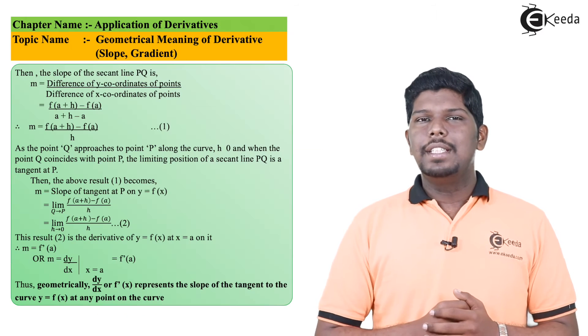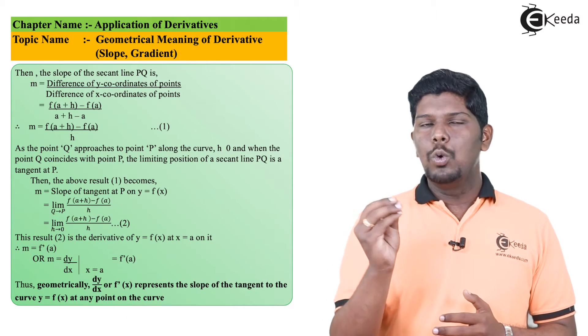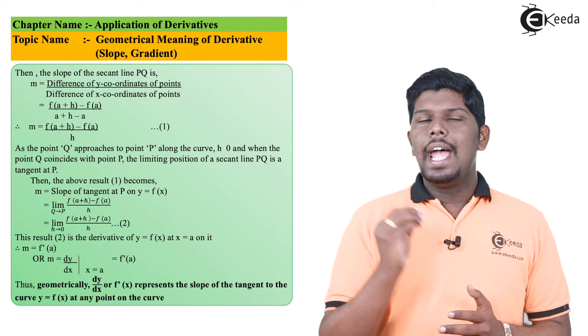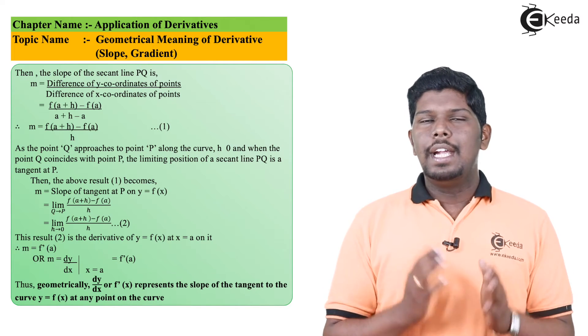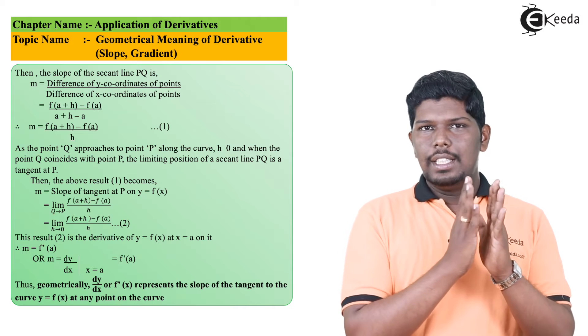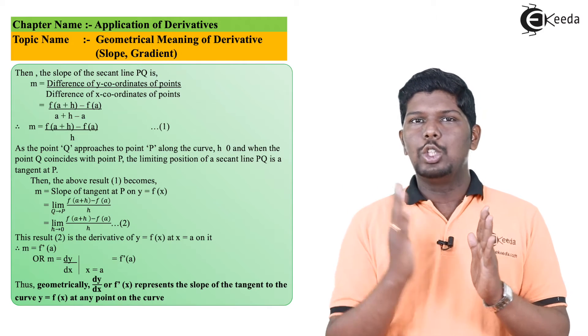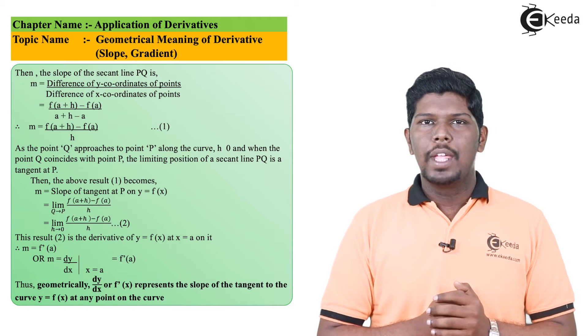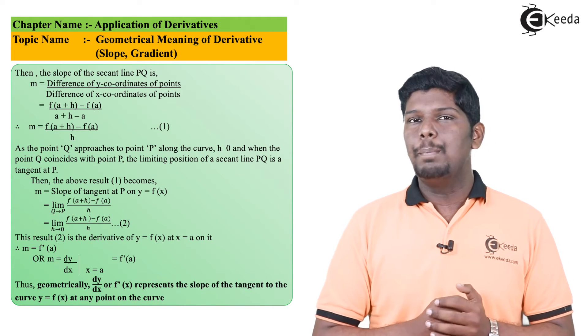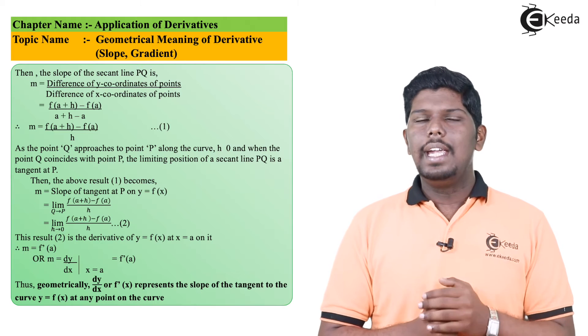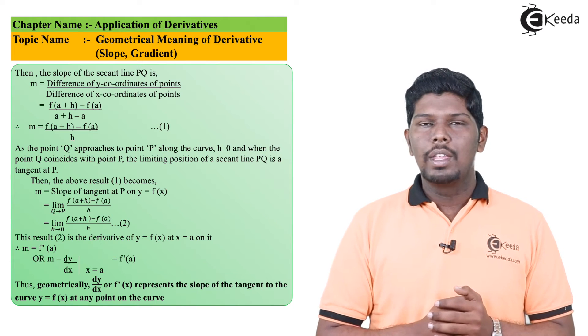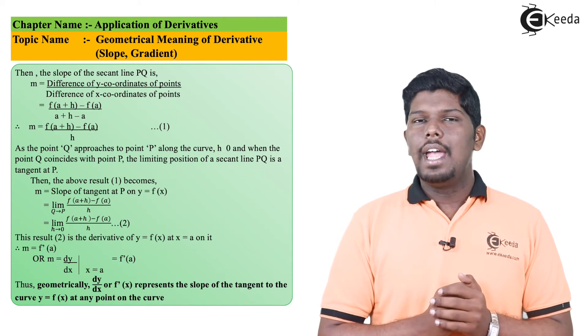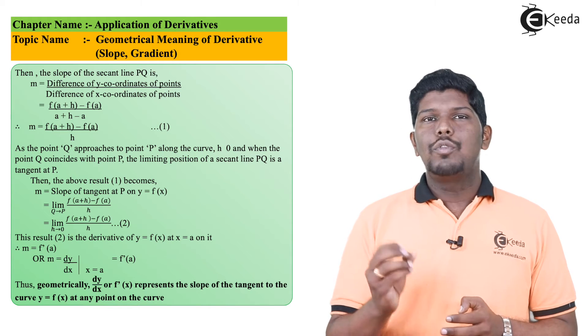Now just imagine I am trying to take Q near P, and that distance will be so small that the value of h—that is, the difference between x and the next coordinate, that is a plus h—that difference h is tending to 0. It means point P and Q are appearing very closer. So in that case, h will be tending to 0, so if we imagine, that line will become a tangent.